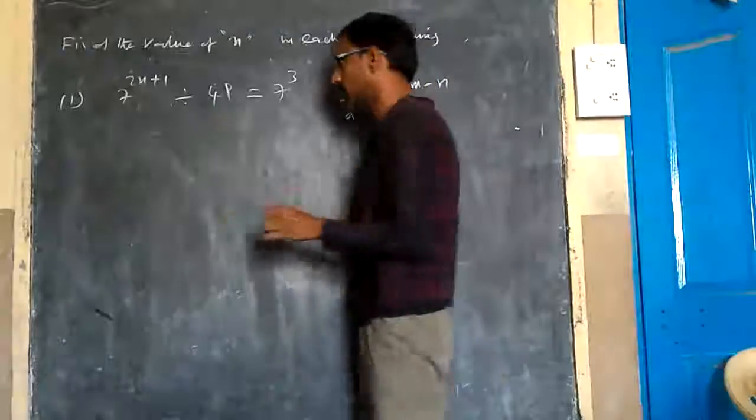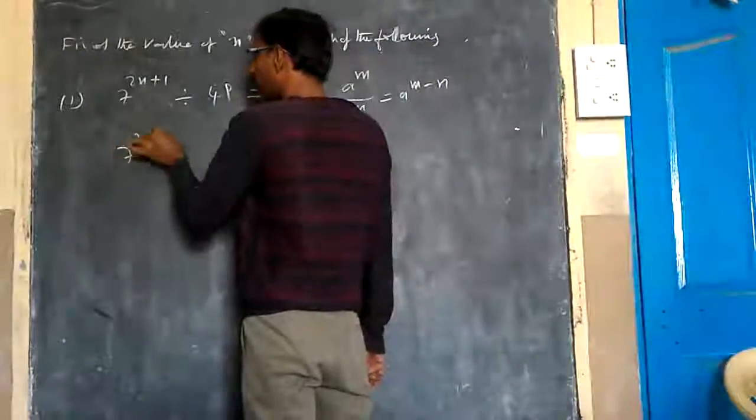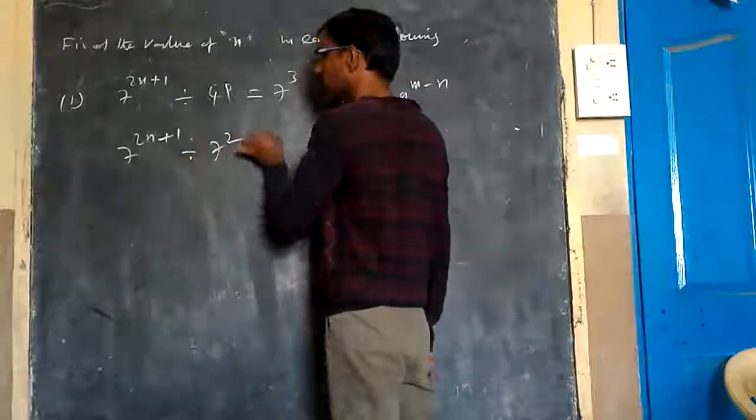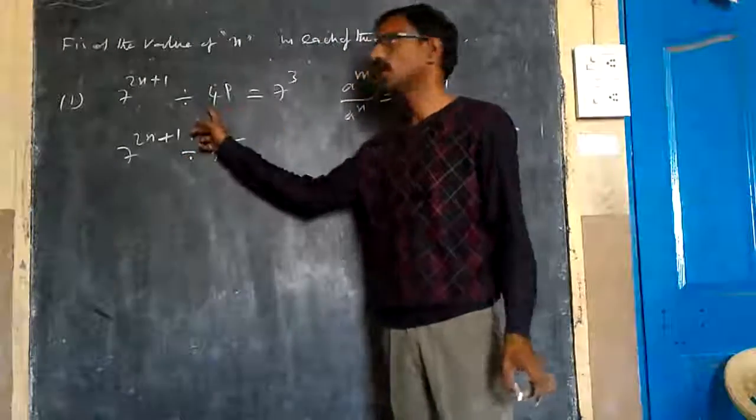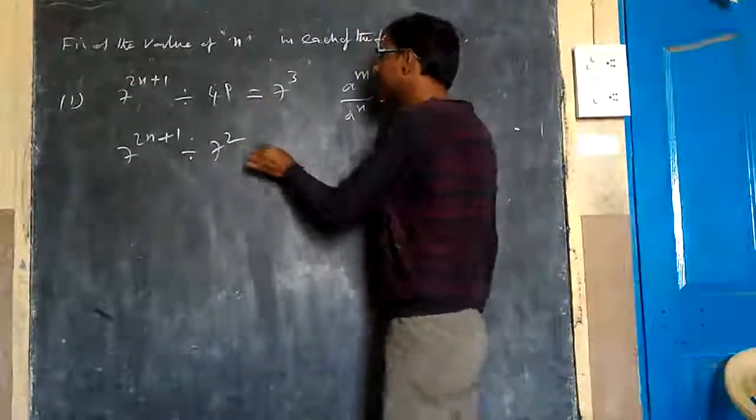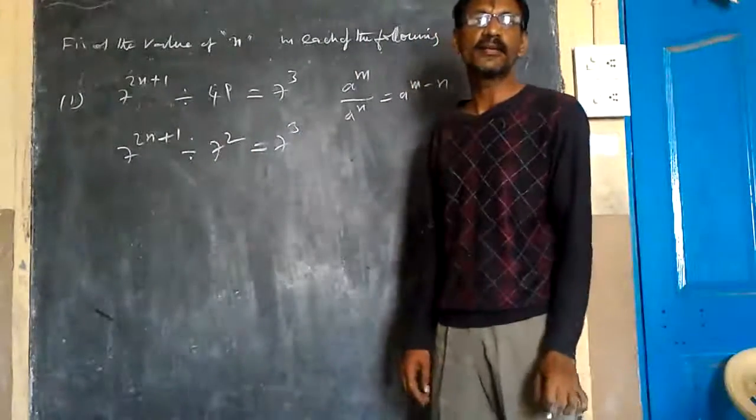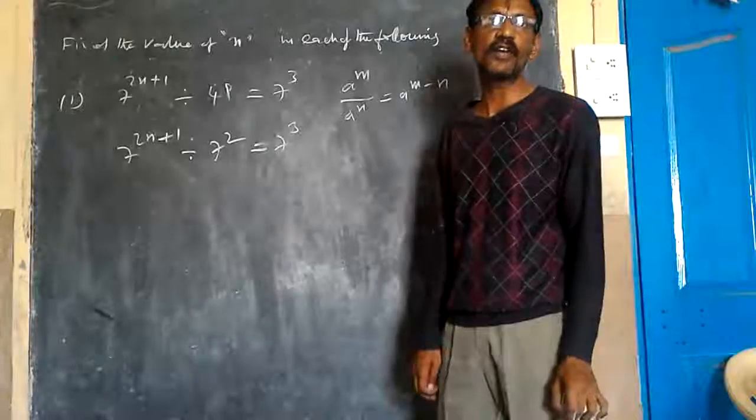Why? Because 7 to the power of 2n plus 1, I will write as it is and divide it by 7 squared. 7 squared is 49. That equals 7 to the power of 4. Is there any doubt in it?